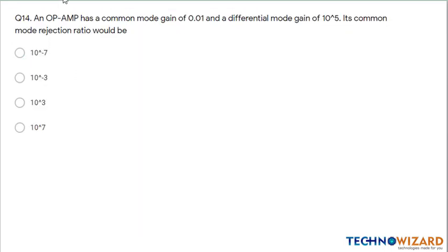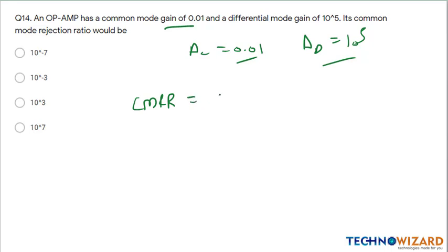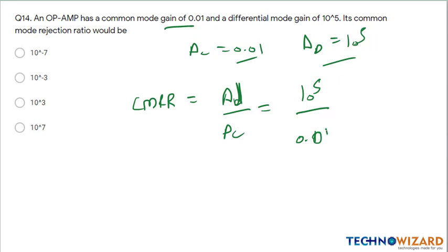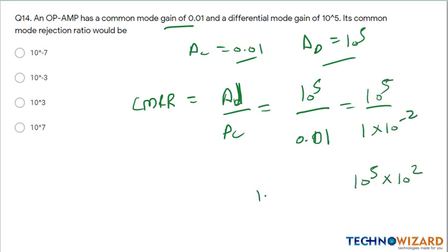Next question: an op-amp has a common mode gain AC = 0.01 and differential mode gain AD = 10^5. We have to find the CMRR = AD / AC = 10^5 / 0.01 = 10^5 * 10^2 = 10^7. Therefore option D — 10^7 — is the correct answer.